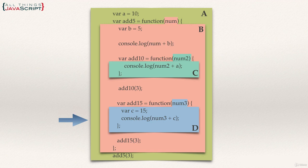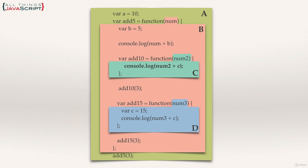What if we changed a line of code? Instead of referring to variable A, it now refers to variable C. Is that possible? Variable C is declared within scope D, and scope D is not part of the scope chain for scope C. Therefore an error would be produced — it would look for C in scope C, can't find it, goes to scope B, can't find it, then scope A, can't find it, and generates an error.